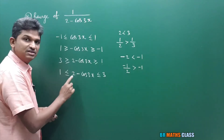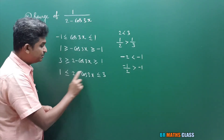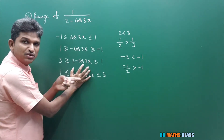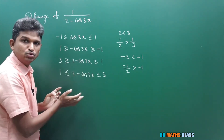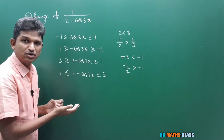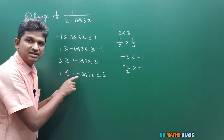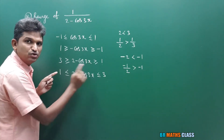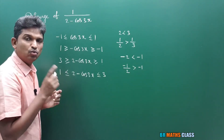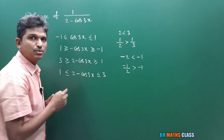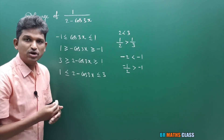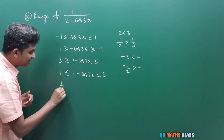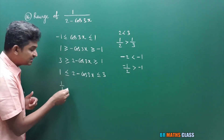This expression 2 minus cos3x lies between 1 and 3. Whatever value you take between 1 and 3, it is positive. So I can directly write its reciprocal because 2 minus cos3x is positive here. Write its reciprocal — 1 by 1. When both numbers are positive and you write the reciprocal, the inequality sign changes: less than or equal to changes to greater than or equal to.